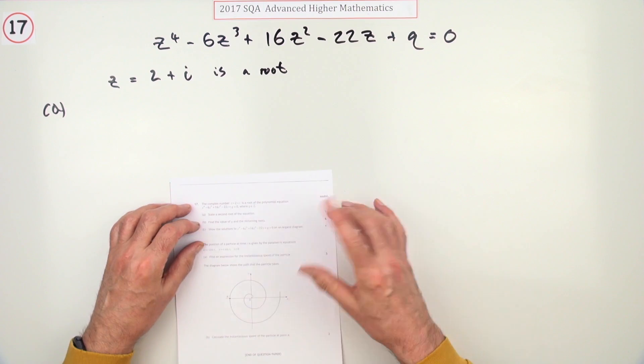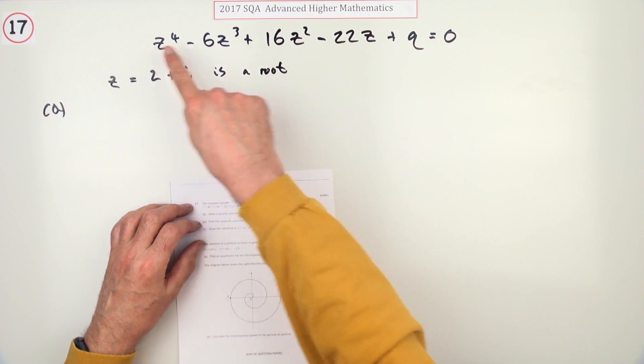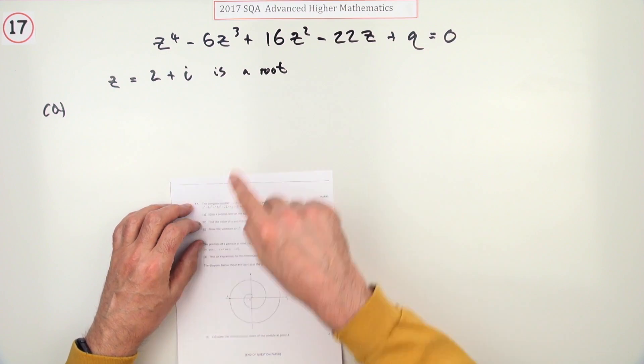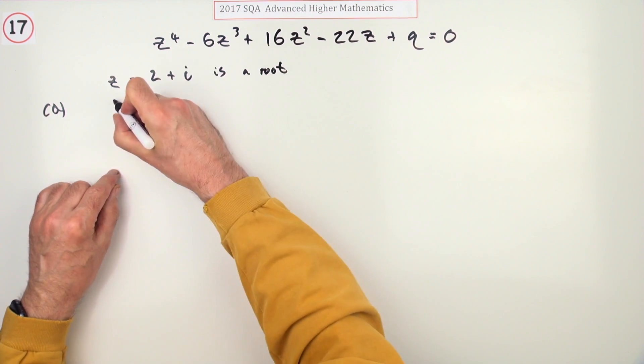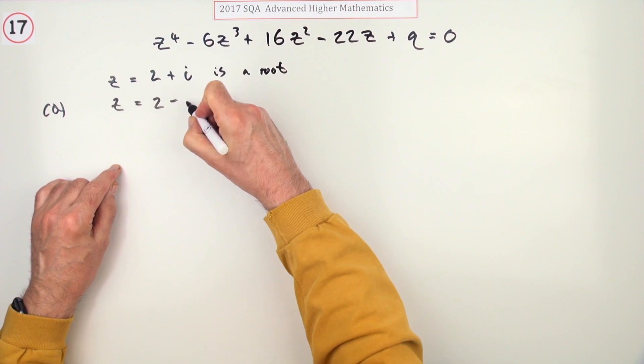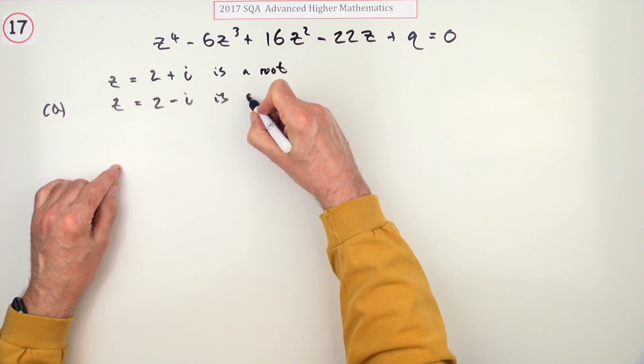For part (a), here's the polynomial. If z = 2 + i is a root, for one mark state a second root. We'll get that very quickly just by stating the conjugate. If that's a root, then z = 2 - i is a root.